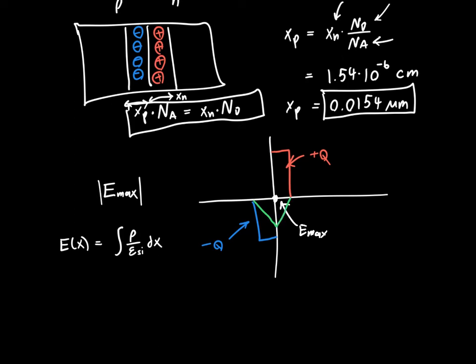We can either integrate on the P side or the N side, because we're going to get the same answer either way. Since we're just integrating a constant charge density, we'll just end up with rho over epsilon silicon. Let's do this on the P side. So rho over epsilon silicon times XP, and rho, the charge density on the P side, is just Q times NA because that's the doping concentration. So that's equal to Q times NA divided by epsilon silicon times XP.